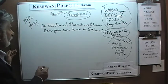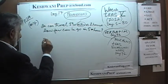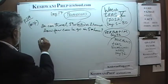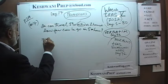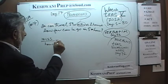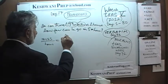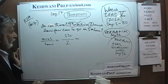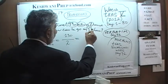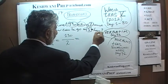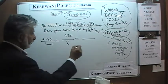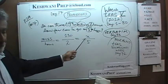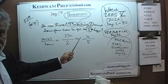Let's set up number seven as a proportion. We have miles on top and hours on the bottom. We are told we can travel 130 miles in two hours. We want to know how far we can go in five hours. The five hours appears on the bottom because hours are at the bottom — pay attention. If you end up putting it on top, whatever wrong answer you get will be one of the answer choices.